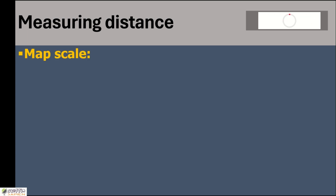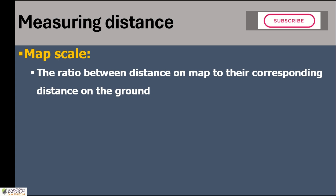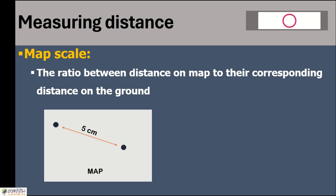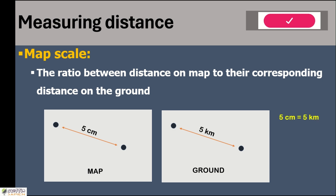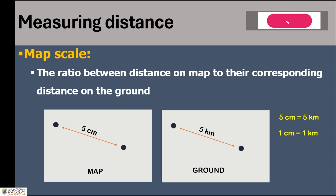Let's try to recollect map scale — we have already learned this many times. Map scale is the ratio between distances on map to their corresponding distance on the ground. For example, if two places are 5 centimeters apart on the map and in reality they are 5 kilometers away, then 1 centimeter on the map equals 1 kilometer on the ground. This ratio is simply called map scale.